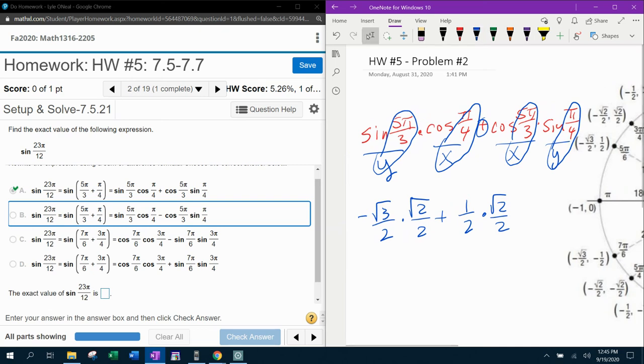And then all I have to do is simplify this expression completely. So let's multiply and see what we get. Negative times a positive makes a negative. Square root of 3 times square root of 2 is square root of 6, all over 2 times 2, which is 4.